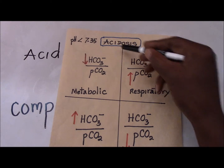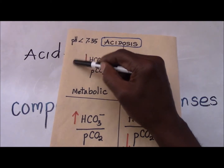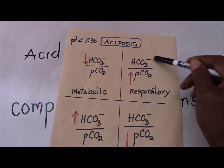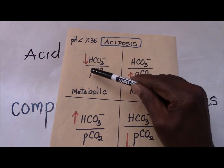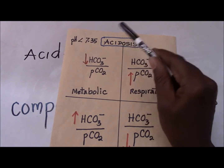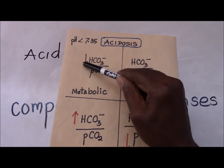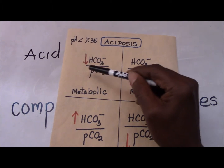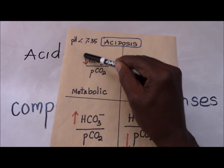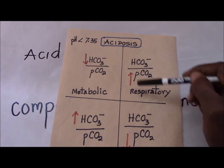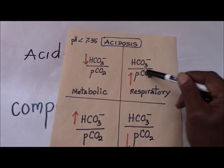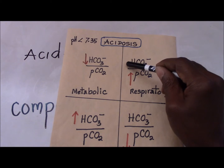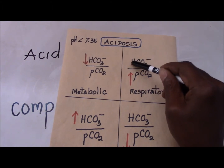A case of acidosis simply means a case in which the pH is reduced below 7.35. It could either be a case of metabolic acidosis or respiratory acidosis. If it is metabolic acidosis, the major event is a loss of bicarbonate, and the compensatory event would decrease in the same direction. In the case of respiratory acidosis, the major event is an increase in the partial pressure of carbon dioxide, and you would expect compensation in the bicarbonate.